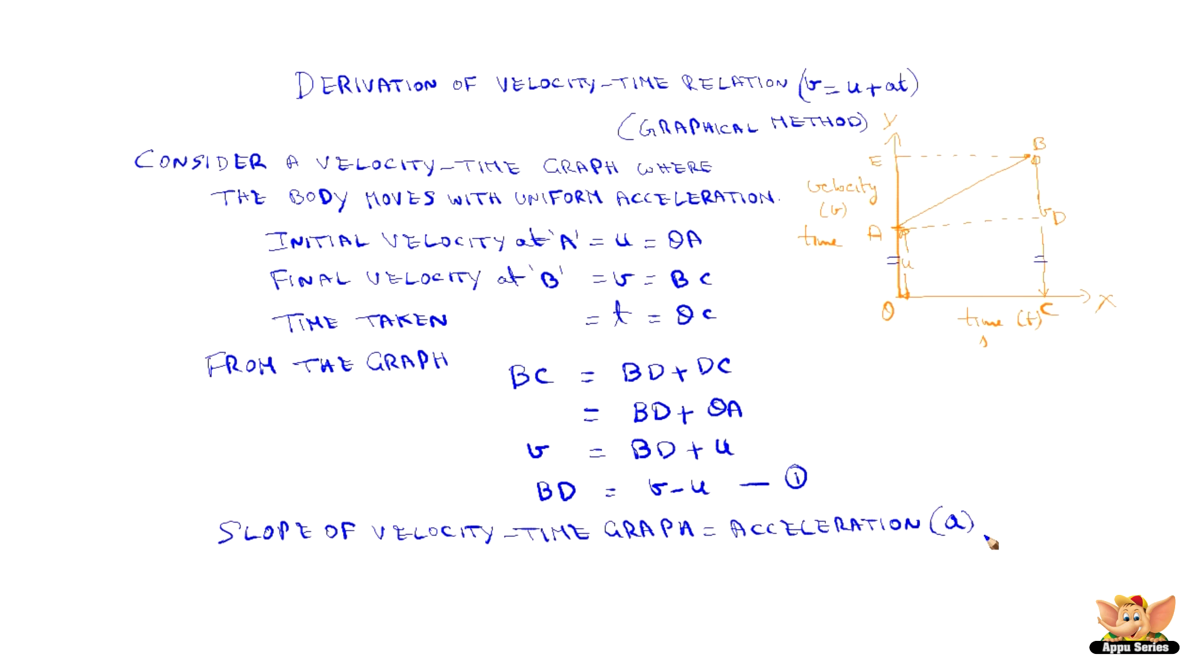So, slope of the velocity-time graph AB is BD by AD. BD by AD is equal to A.